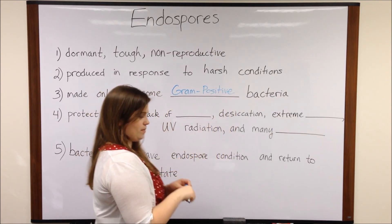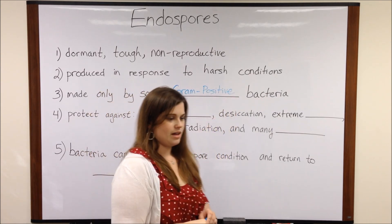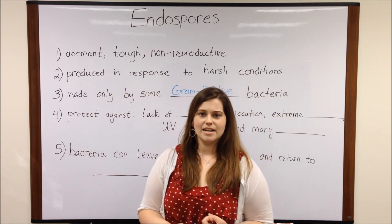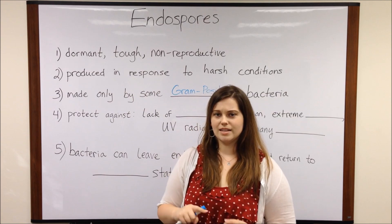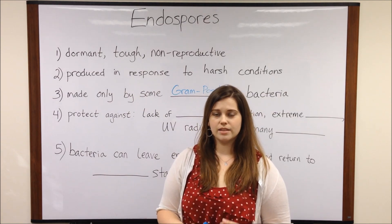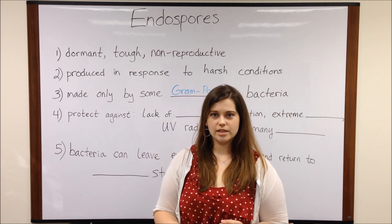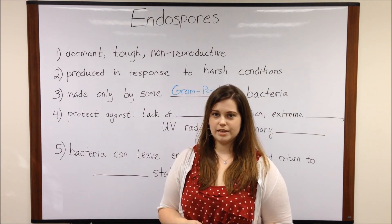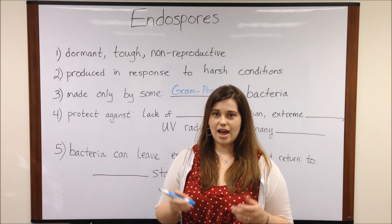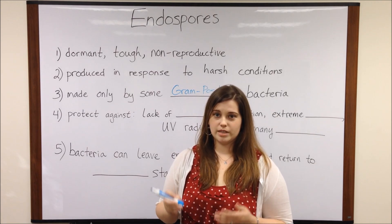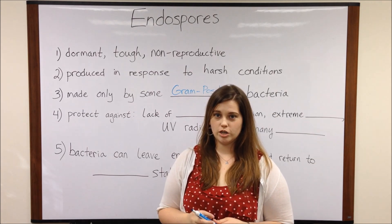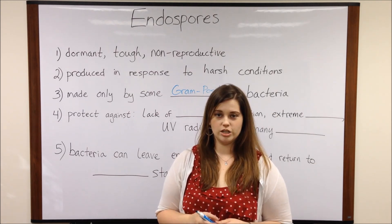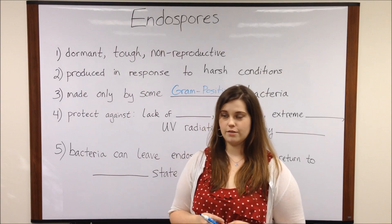For example, the bacteria that cause tetanus, that cause anthrax, that cause botulism — these are all types of bacteria that can produce endospore structures when their environmental conditions aren't very favorable.